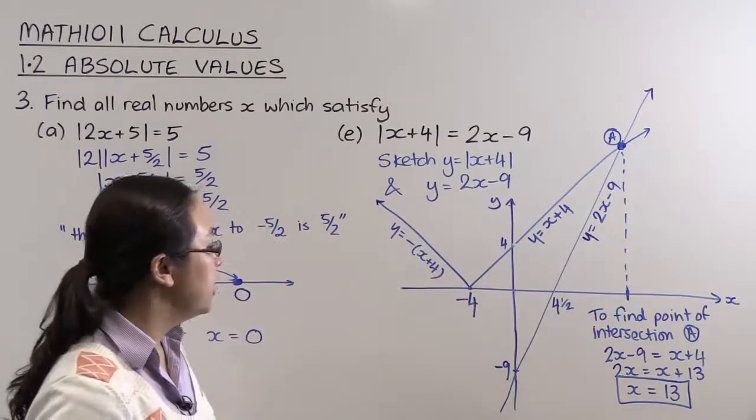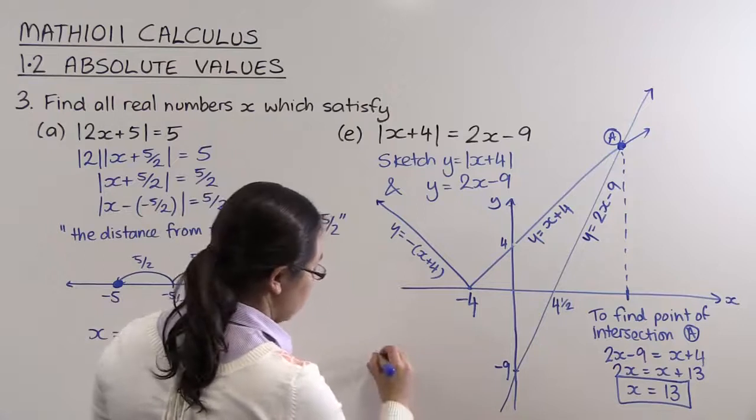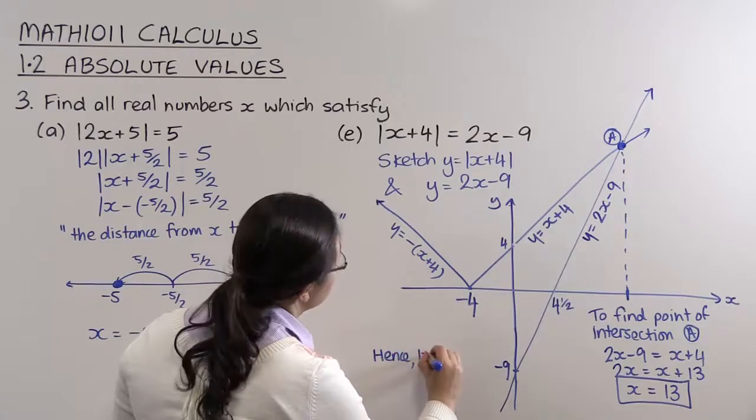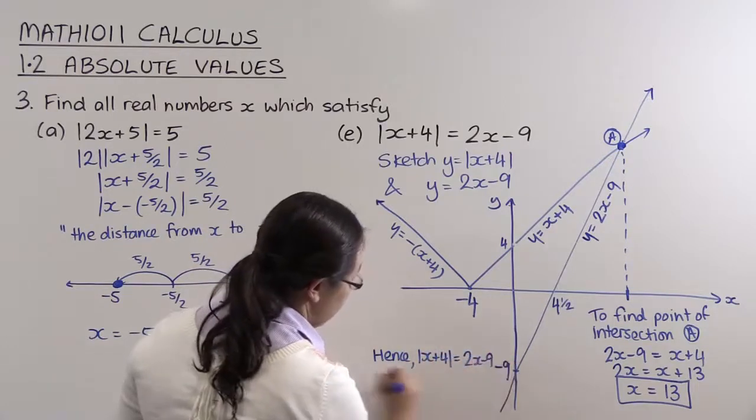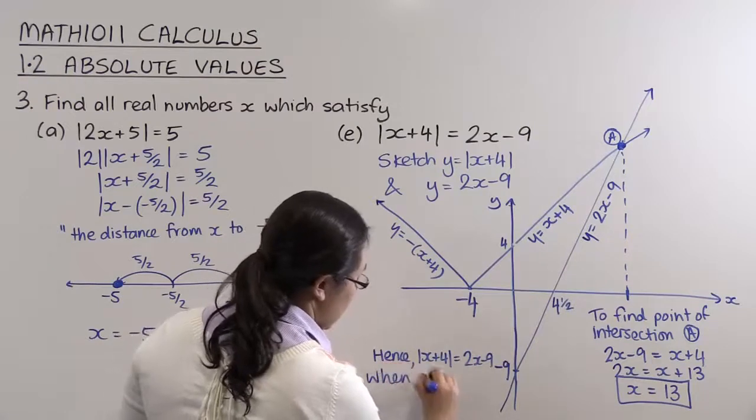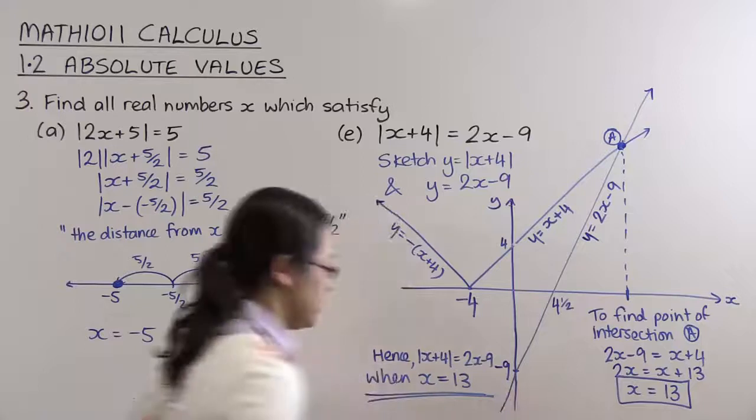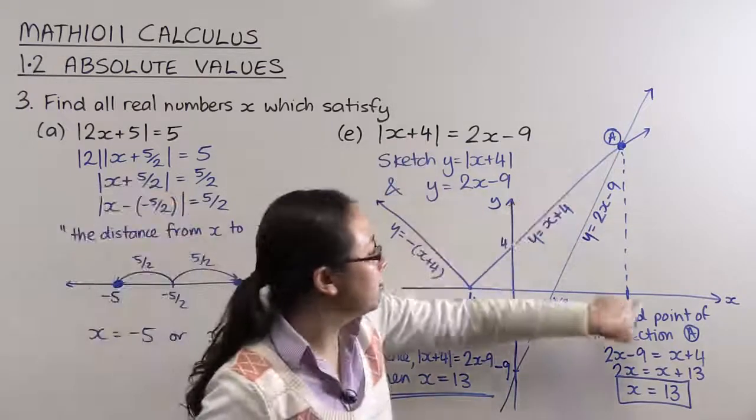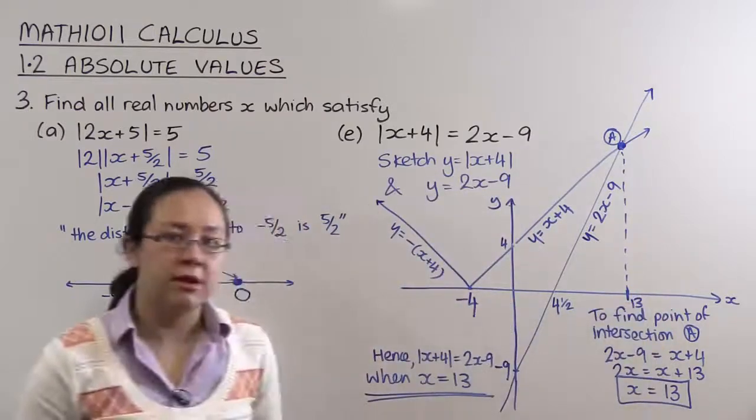I'm writing this a bit all over the place because I'm running out of room. So hence, the absolute value of x plus 4 equals 2x minus 9 when x equals 13. That's our solution to this equation, which we can see on our graph here. That's the x value for where the graphs intersect.